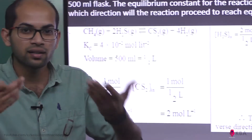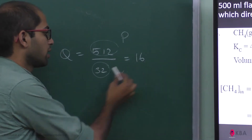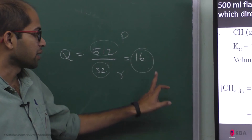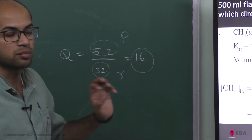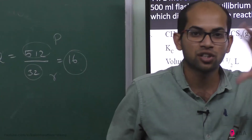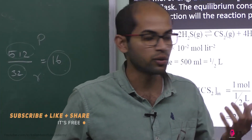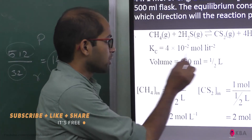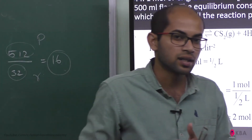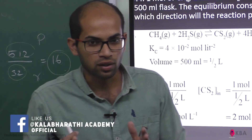The Q value is higher, meaning product concentration is greater than reactant concentration at equilibrium. When Q is greater than Kc, the reaction proceeds in the reverse direction; when Q is less than Kc, the reaction proceeds in the forward direction. This is the concept for equilibrium attainment.